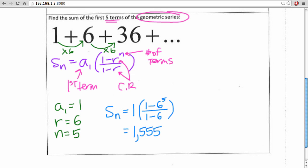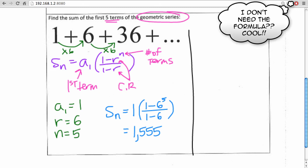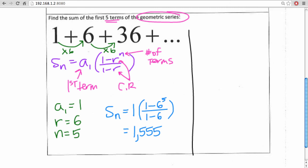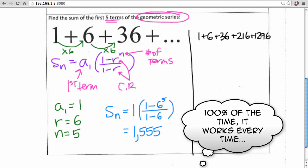There's an alternative method that you can use in the event that you don't remember the formula to calculate the sum of geometric series. Keep in mind the sum of the series is just adding up each of the terms. So if it's something small like this where we're looking at five terms, we're looking at the sum of 1, 6, 36, 216, and 1,296. Theoretically, you could just list out all of your terms and add them together, and you will wind up getting the same thing.